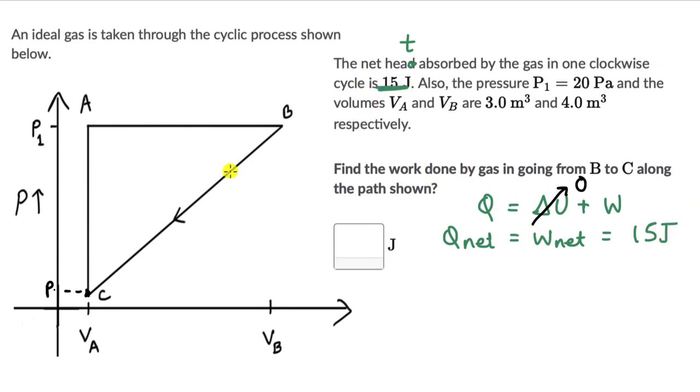Now we need to figure out the work done for one path. So let's divide this cycle into three parts, AC, AB, and BC. So the net work done, this is really equal to work done in the process CA plus work done in the process AB plus work done in the process BC.